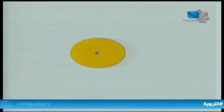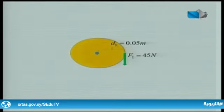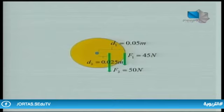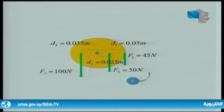لنأخذ بعض التطبيقات على التوازن الدوراني. ليكون لدينا قرص يمكنه أن يتحرك حركة دورانية حول مركزه، تؤثر فيه ثلاث قوى: القوة F1 تساوي 45 نيوتن وتبعد 5 سنتيمتر عن محور الدوران، والقوة F2 تساوي 50 نيوتن وتبعد 0.025 متر أي 2.5 سنتيمتر، والقوة F3 تساوي 100 نيوتن وتبعد 3.5 سنتيمتر عن محور الدوران.